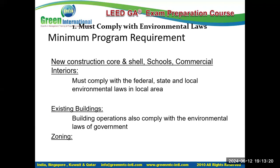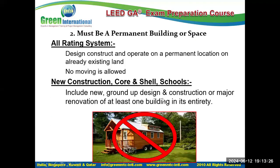New construction must comply with all federal, state, and local environmental laws and zoning requirements. The second MPR requirement is that it must be a permanent building — designed, constructed, and operated on a permanent location. No moving is allowed; it must be a permanent structure.